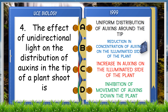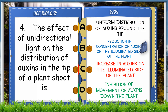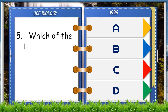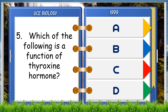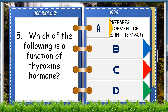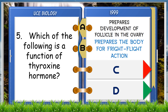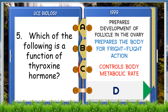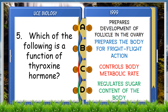Which of the following is a function of thyroxine hormone? A. Prepares development of follicle in the ovary, B. Prepares the body for fight or flight action, C. Controls body metabolic rate, D. Regulates the sugar content of the body. The answer is C, controls body metabolic rate.